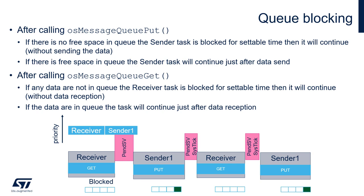Concerning the receiver: to get data from the queue, a receiver calls OSMessageQueueGet. If the queue is empty, the receiver task will be blocked for a settable time, and then it can continue without data reception — in this case the return value is OS_ERROR_TIMEOUT. For more details, please refer to the specification of type OS_STATUS_t. In case OS_WAIT_FOREVER is specified as the timeout, the receiver task will be blocked until there is new data in the queue. If data is available, the task reads it and continues just after data reception, without waiting for the timeout to elapse.